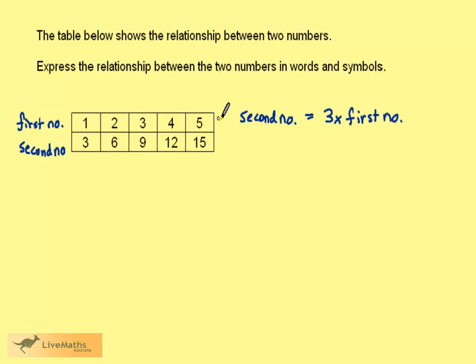So we have the formula in words and symbols but we can do better. Let's call the first number F and the second number S. We can then write this as S is equal to 3 times F.